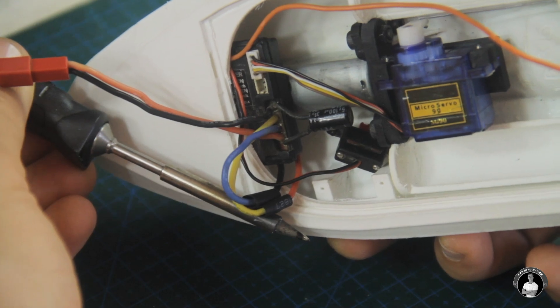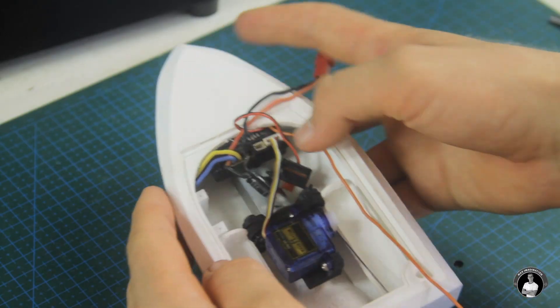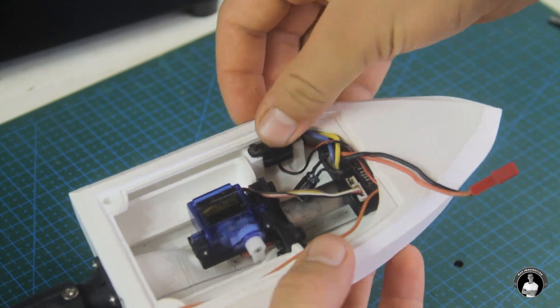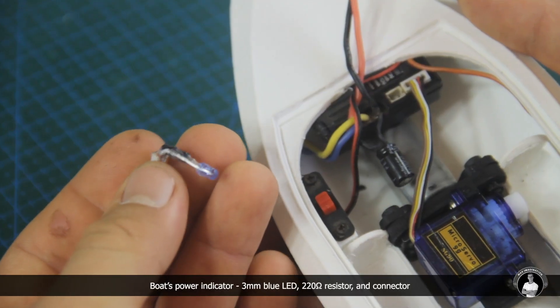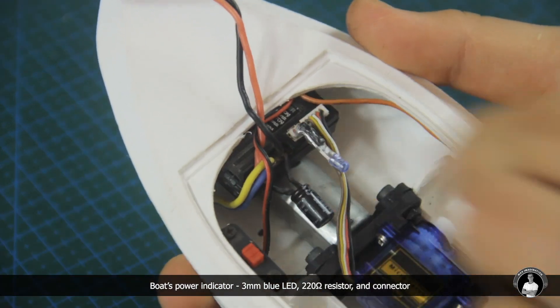To make powering the boat on and off a little easier, we'll mount the controller's power switch in the design slot over here and fasten it down. I also decided it would be handy having a little LED powered from the controller to tell whether the boat is on or off.